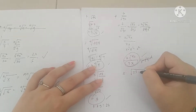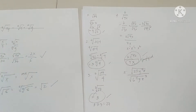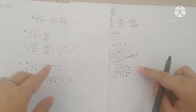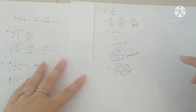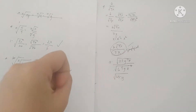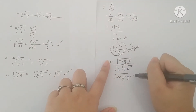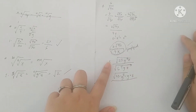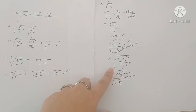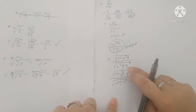Number 5: square root of 25y⁵z over square root of 64yz³. This falls under the quotient law, so we separate them. For the numerator: square root of 25 times y⁴ times y times z. We factor y⁵ as y⁴ times y because y⁴ has a perfect square root. For the denominator: square root of 64 times y times z² times z. We factor z³ as z² times z because z² has a perfect square root.